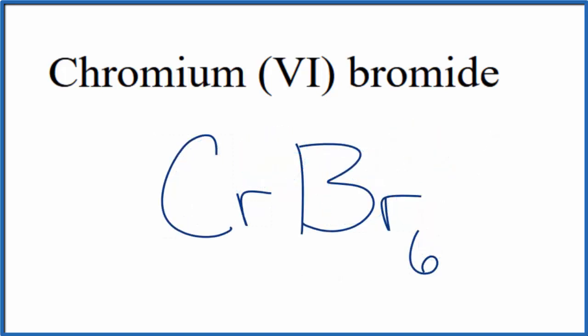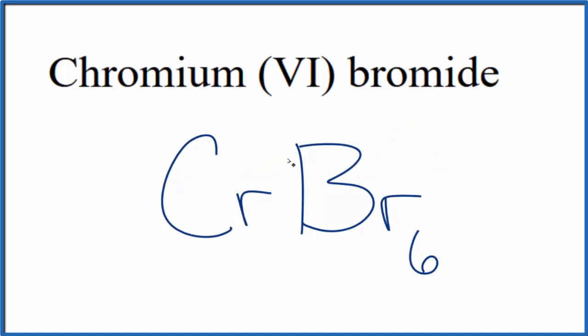So this is the formula for chromium (VI) bromide: CrBr₆. If you were given the formula and asked to write the name, you'd know that you have 6 bromide ions giving 6-. We'd have to have 6+, so we'd write chromium (VI) to show the 6+ in the name.